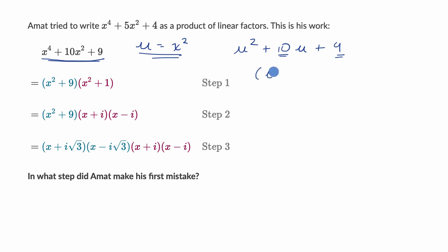And so you could write this as u plus 9 times u plus 1. And of course, if u is equal to x squared, this would be x squared plus 9 times x squared plus 1, which is exactly what Amat has right over here. So step 1 is looking great.